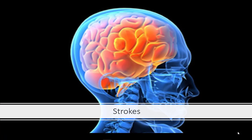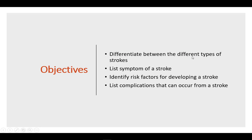Stroke is in the family of cardiovascular diseases and is the number five cause of death and a leading cause of disability in the United States. In this video we will be differentiating between the two main types of strokes and identifying symptoms of each. We will also list risk factors for developing a stroke and discuss complications that can occur.